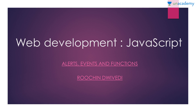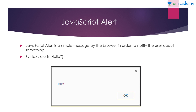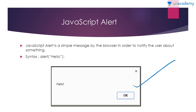Hi guys, welcome to Anacademy. This is our fourth video in this course. In this video we will learn about alerts, JavaScript events, and functions. Let's start with our very first topic: JavaScript alerts. A JavaScript alert is a simple message shown by the browser to notify the user about something. Many times you go to some website and you can see this type of pop-up that comes on your screen.